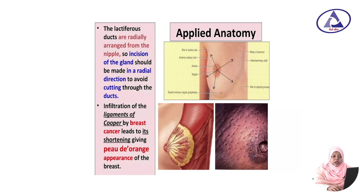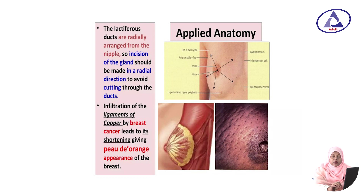The lactiferous ducts are radially arranged from the nipple. Incision of the gland should be made in a radial direction to avoid cutting through the ducts. Infiltration of the ligaments of Cooper by breast cancer cells leads to shortening, giving a peau d'orange appearance of the breast.